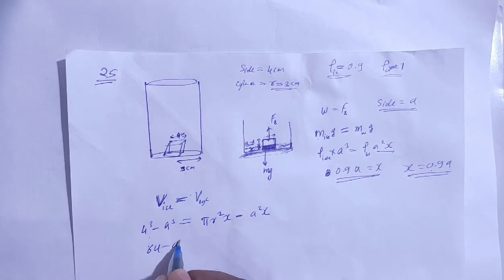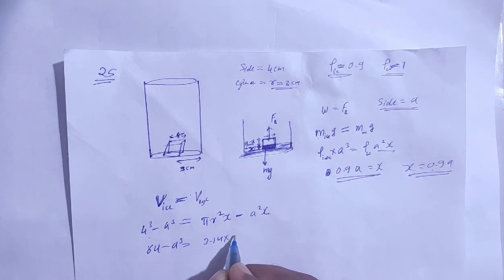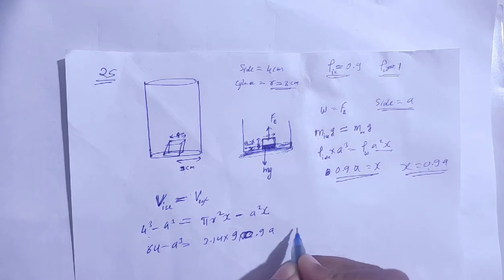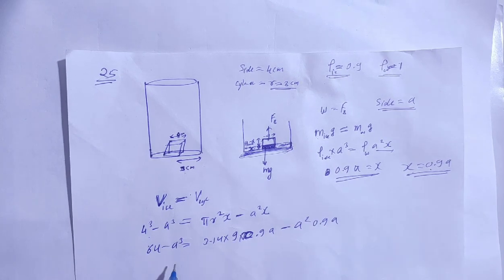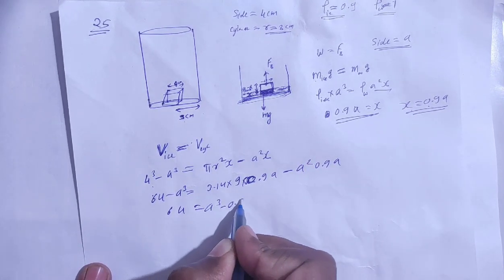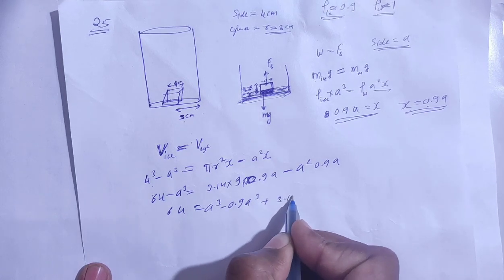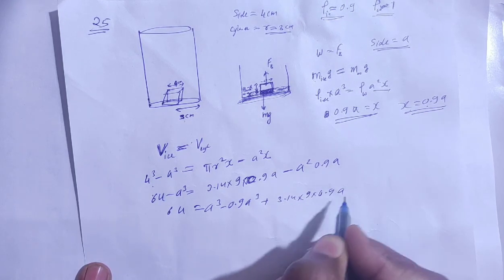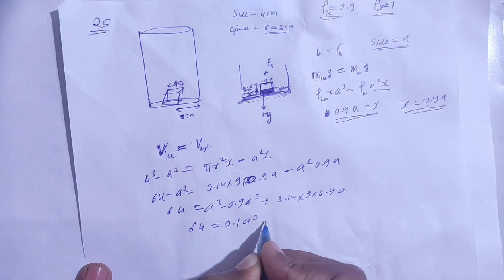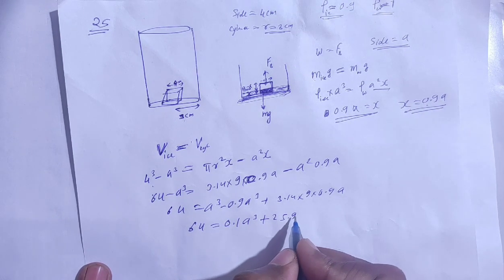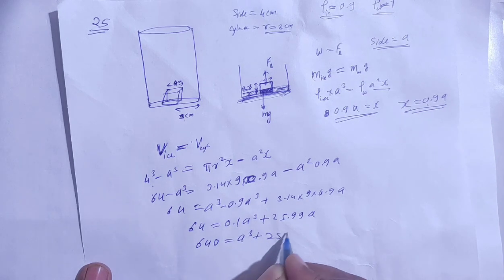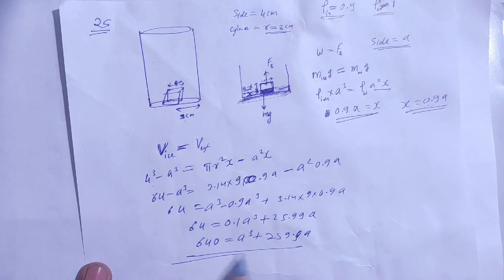So 4 cubed is 64. 64 a cubed minus 0.9 a cubed plus 3.14 times 9 times 0.9 a. So it will solve: 64.1 a cubed plus 25.99 a. This is 10 times: 640 a cubed plus 259.9 a. Okay, this is the equation.